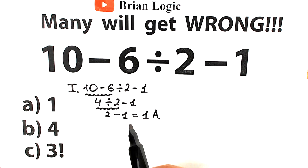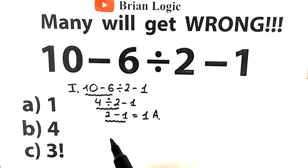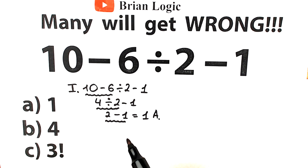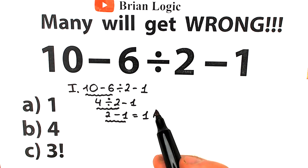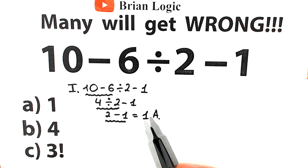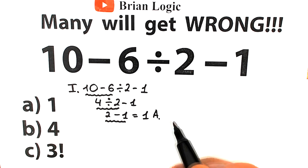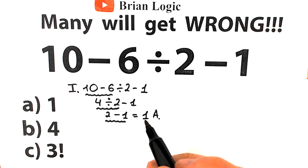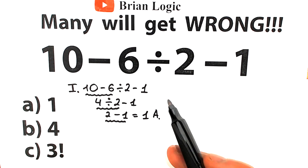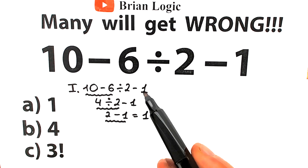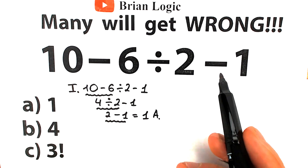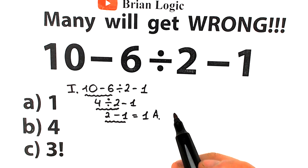A lot of students say that 1 is the correct answer to this challenge. But in math we should know the correct order of operations — we can't solve this randomly. Whatever order of operation we select is going to create a different answer, so we need to understand the correct order. What is the first step: division, the first subtraction, or the subtraction on the right-hand side? This is a really important moment.